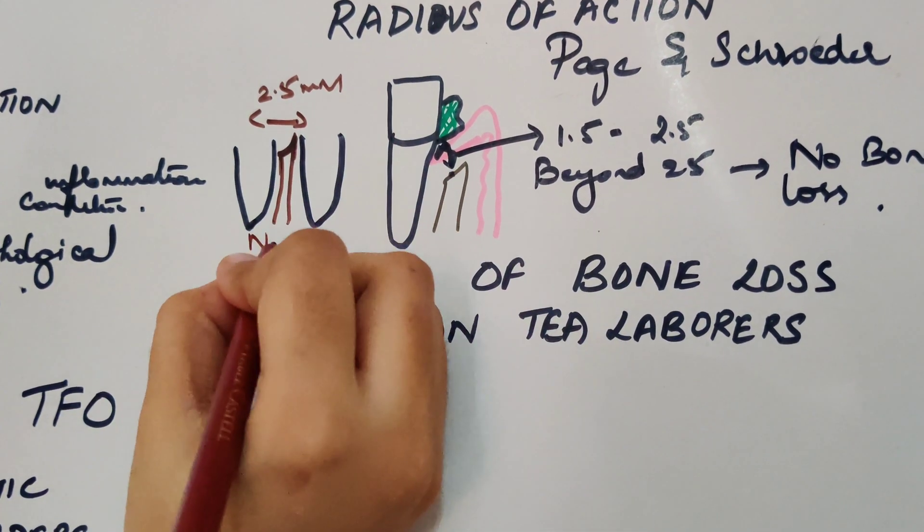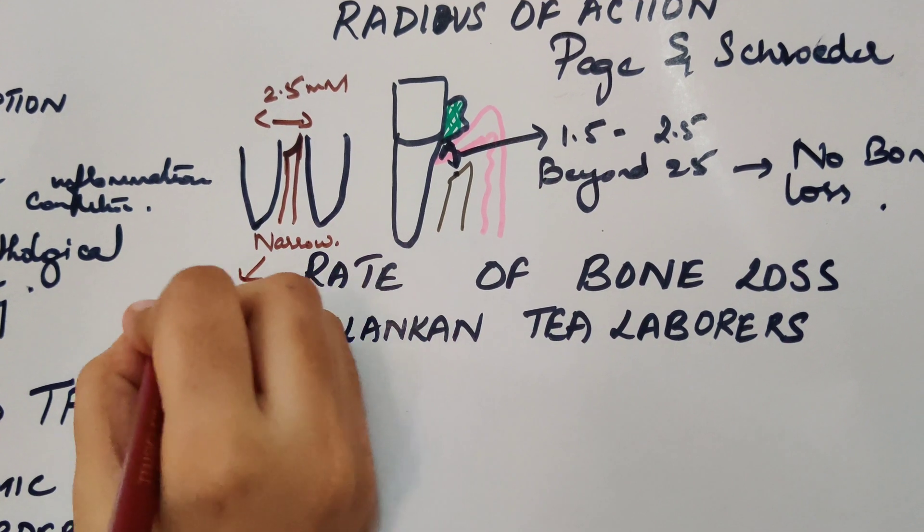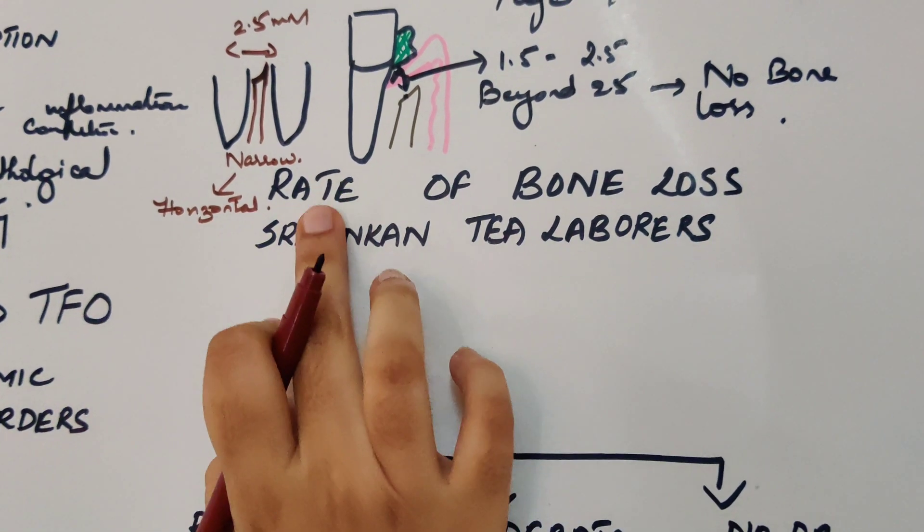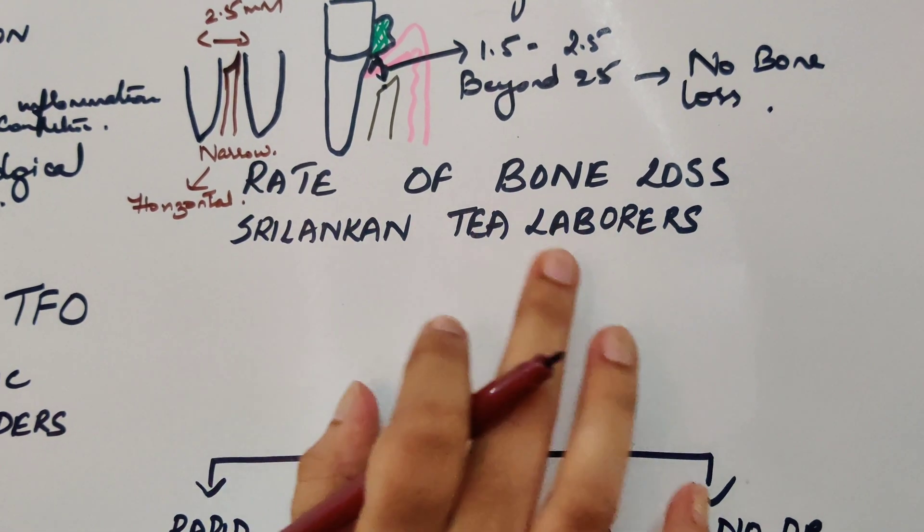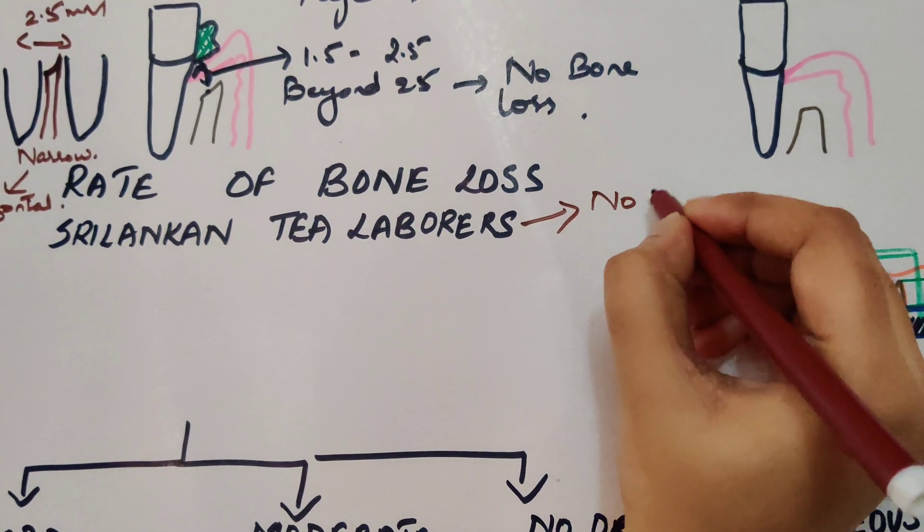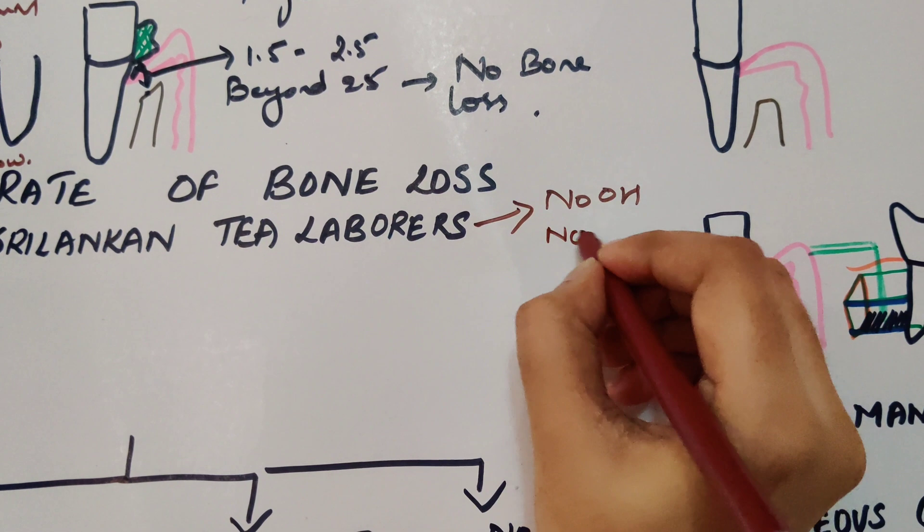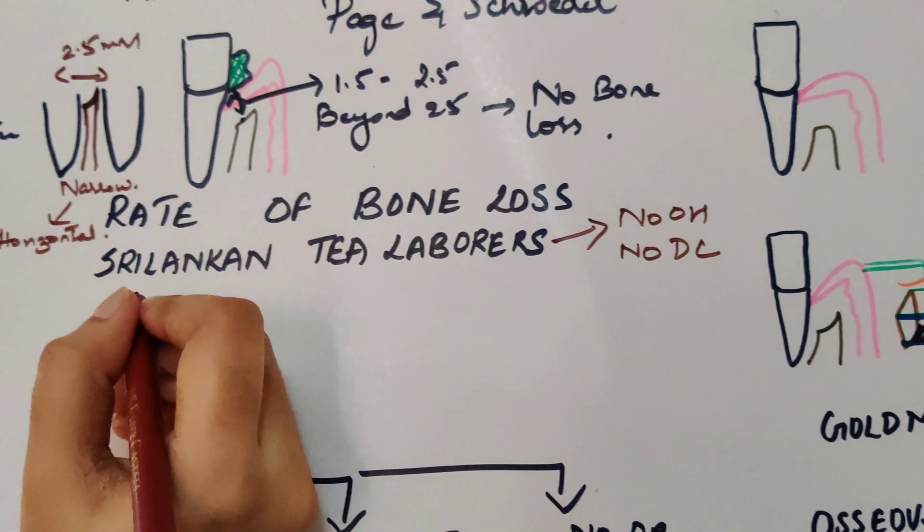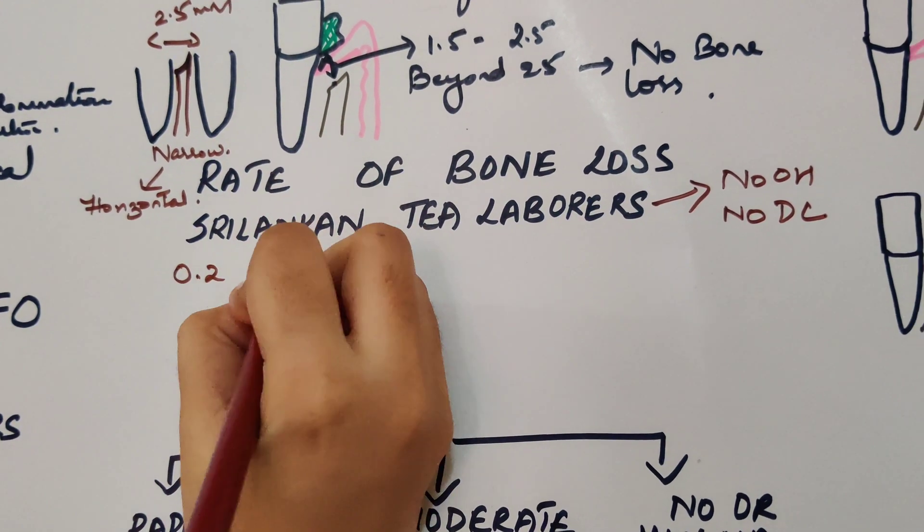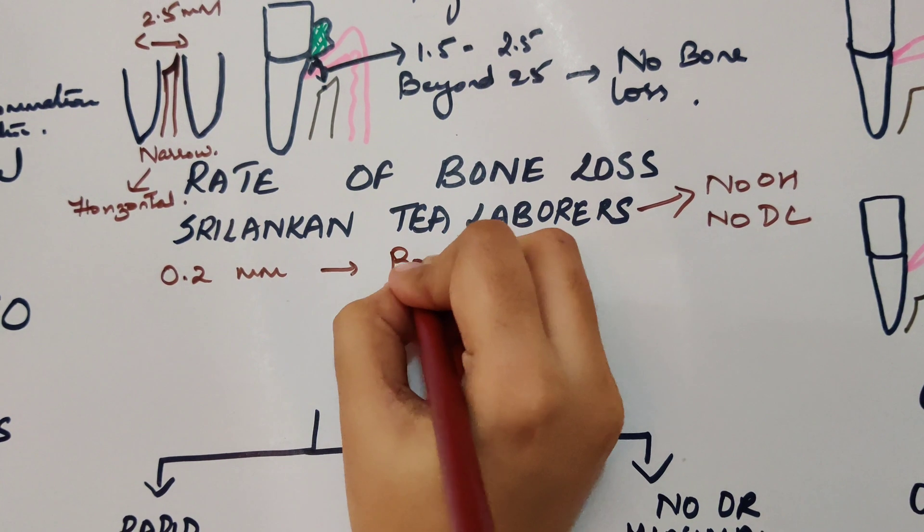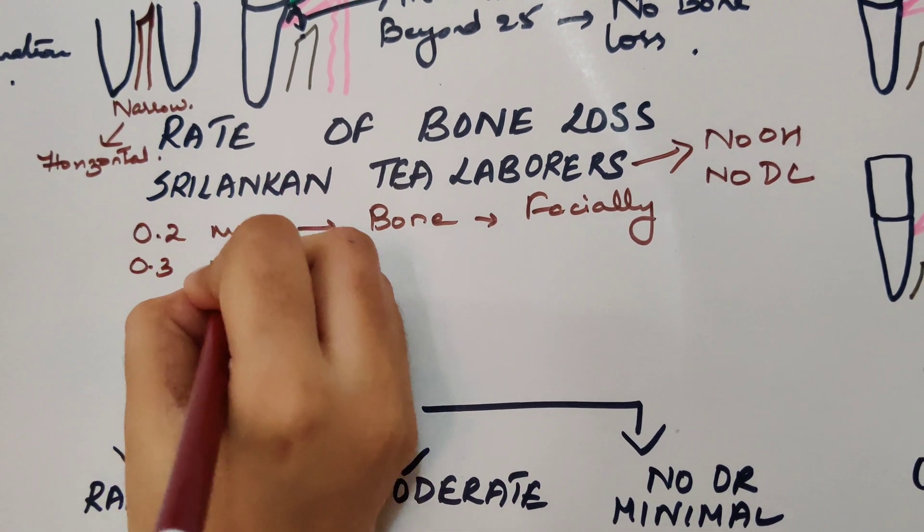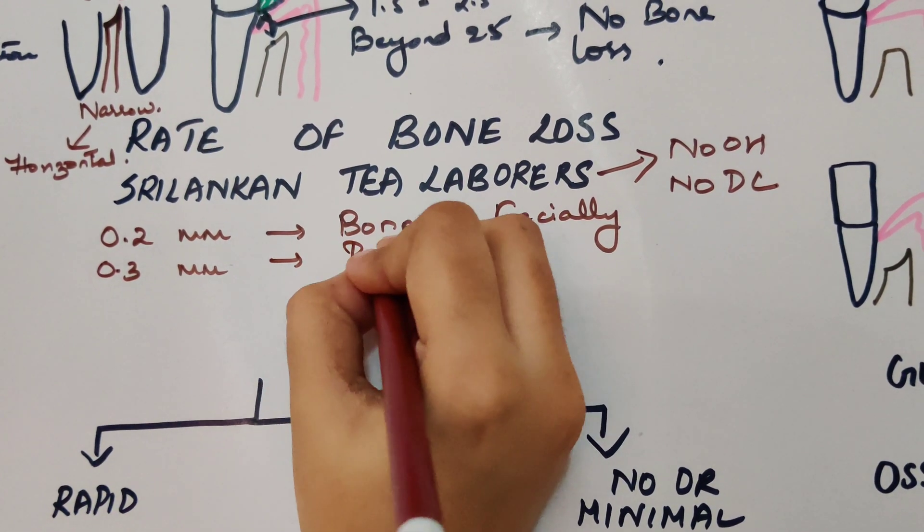Now coming to what is rate of bone loss. Löe and colleagues did a study on Sri Lankan tea laborers where they had no oral hygiene and no dental care, and they found out that when they studied throughout the year, around 0.2 mm of bone is lost facially and 0.3 mm of bone was lost proximally.